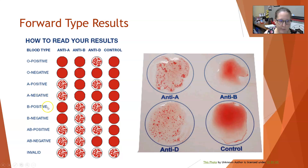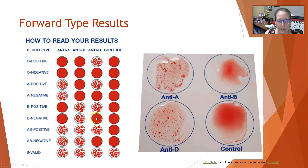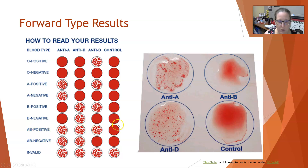If B positive: no reaction with anti-A, but reaction with anti-B because they have the B antigen, and reaction with anti-D because they're Rh positive; control negative. If B negative: no reaction with anti-A, reaction with anti-B (they have the B antigen), and no reaction with anti-D or control. AB positive would react in all wells except the control: reacts with anti-A (has A antigen), reacts with anti-B (has B antigen), and reacts with anti-D (has the Rh antigen); control negative.